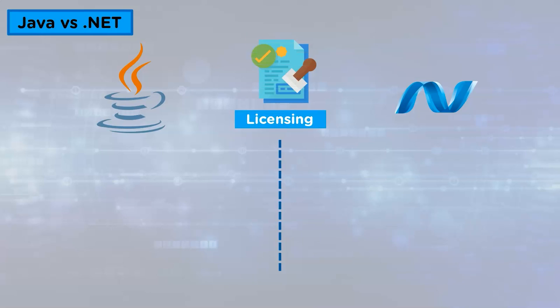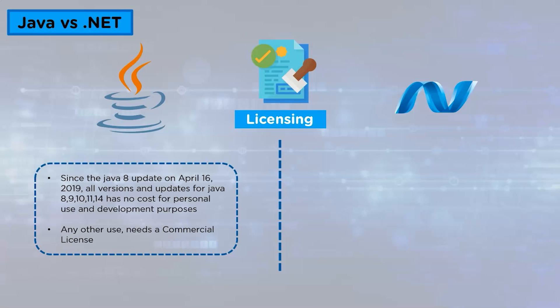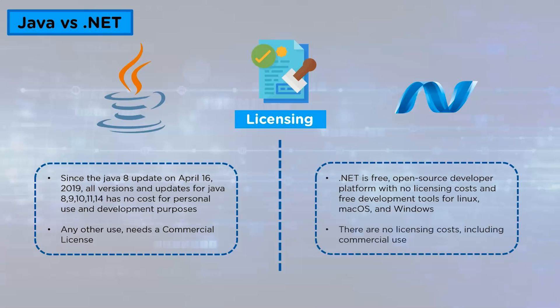Now let us look at the licensing of Java and .NET. Since the Java 8 update on April 16, 2019, all versions and updates for Java above 8 have no cost for personal use and development purposes, but any other use needs a commercial license. Whereas .NET is a free, open-source developer platform with no licensing cost, free development tools for Linux, Mac OS, and Windows, and no licensing costs including commercial use.